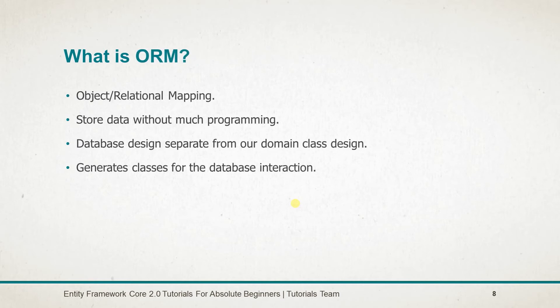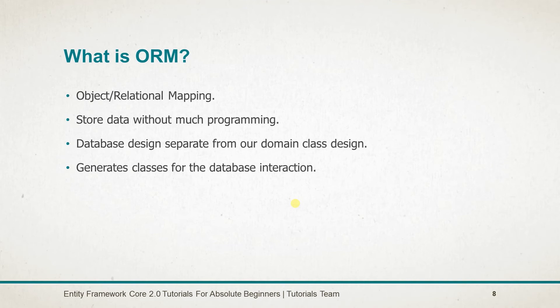Entity Framework is an ORM. ORM stands for Object Relational Mapping. ORM is a tool that stores data from domain objects to a relational database like MS SQL Server in an automatic way without much programming. ORM allows us to keep the database design separate from our domain class design, which makes applications more maintainable and extendable. A typical ORM tool generates classes for the database to interact with our application.